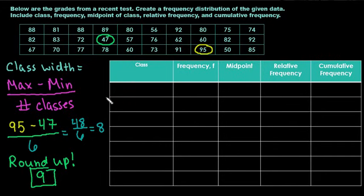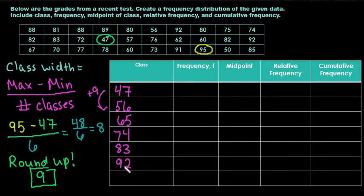So when we're setting this up, we start with our minimum as our first value. So our minimum was 47. And then to go to the next class, we just use our class width. So I would add 9 to each of these. So our next one would be 56. We're going to add 9 again, which puts us at 65. Add 9 again gives us 74. Add 9 again, we get 83. And then we add 9 one last time and we get 92.